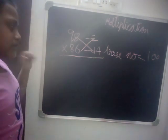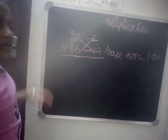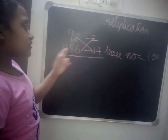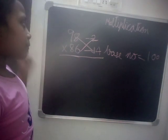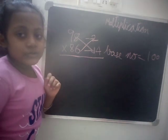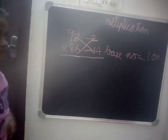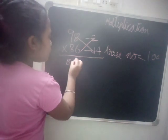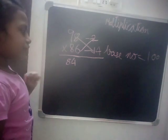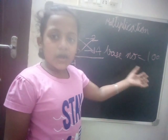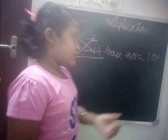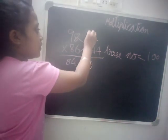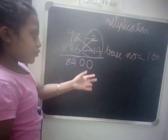When doing multiplication with the base method, both numbers should have the same number of digits. Here 98 has 2 digits and 86 also has 2 digits. Do cross subtraction: 98 minus 14 is 84, and 86 minus 2 is also 84. The base number is 100, which has two zeros, so after the answer write two zeros.